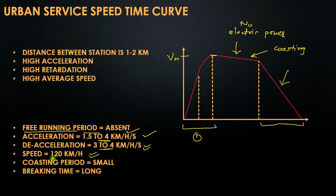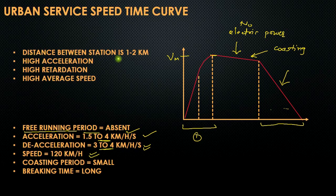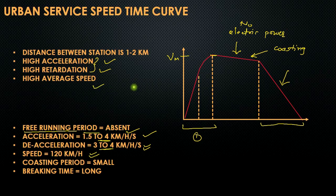In urban services, we need electric locomotives with an acceleration of 1.5 to 4 km per hour per second and a deceleration of 3 to 4 km per hour per second. The deceleration period is larger compared to the acceleration period. The average speed of the electric locomotive is around 120 km per hour. Because of high acceleration, the coasting period is small in comparison to the braking time. The distance between stations is 1 to 2 km, and due to high acceleration and retardation, the average speed is usually high.